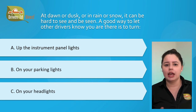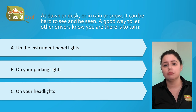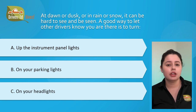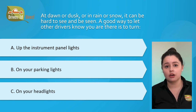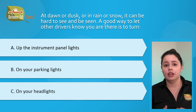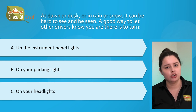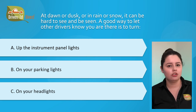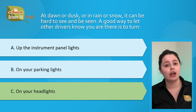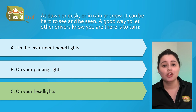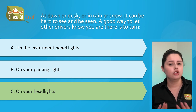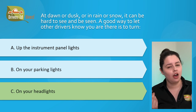Question number twenty: at dawn or dusk, or in rain or snow, it can be hard to see or be seen. A good way to let other drivers know you are there is to turn on: A) the instrument panel lights, B) your parking lights, or C) your headlights. The correct answer is C, your headlights. Anytime you have trouble seeing other cars they will have trouble seeing you. Driving with your headlights on no matter the conditions is always a good idea because it increases your visibility on the road.